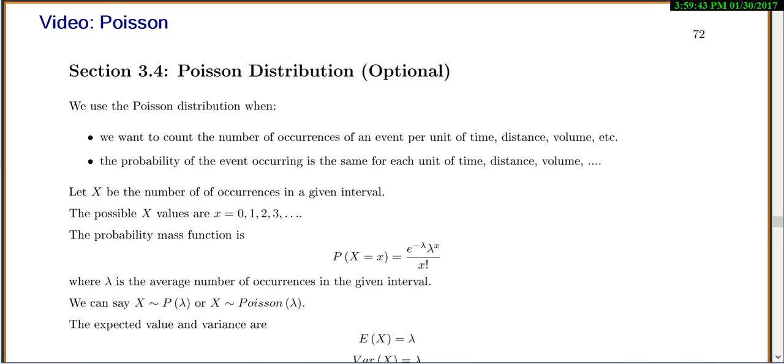So this would be something like counting the number of tomato plants that have mold on them in one acre. And the probability of the event occurring is the same for each unit of time, distance, or volume.